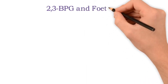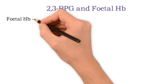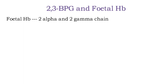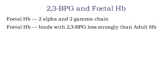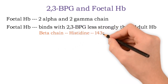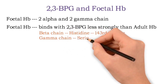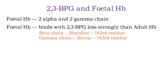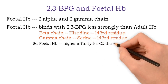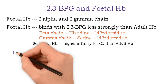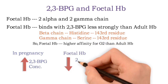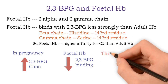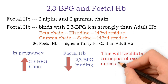Fetal hemoglobin consists of 2 alpha and 2 gamma chains instead of the beta chains of adult hemoglobin, so fetal hemoglobin binds 2,3-BPG less strongly than adult hemoglobin. The reason is that the beta chain of adult hemoglobin has histidine at position 143, whereas the gamma chain of fetal hemoglobin has serine at position 143. Therefore, fetal hemoglobin has a higher affinity for oxygen. This is beneficial in pregnancy: increased 2,3-BPG reduces oxygen affinity on the maternal side of the placenta, while fetal hemoglobin binds 2,3-BPG less strongly and has higher oxygen affinity, facilitating transport of oxygen across the placenta from mother to fetus.